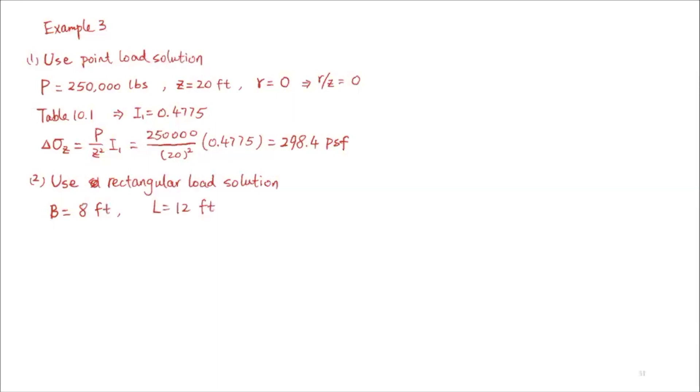First, let's calculate M1 and N1. M1 equals Z over small b, where small b is half the width, so that's 20 over 4 equals 5. Once we have these two values, we can use Table 10.11.